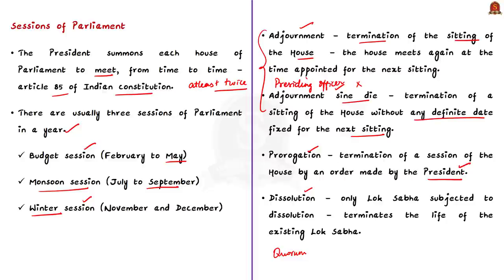Now let us talk about dissolution. Only Lok Sabha is subjected to dissolution. Since Rajya Sabha is a permanent house, it is not subjected to dissolution. What is the difference between prorogation and dissolution? While prorogation terminates a session of the Lok Sabha, dissolution terminates the life of the existing Lok Sabha. After dissolution, general elections are held and a new Lok Sabha is constituted.